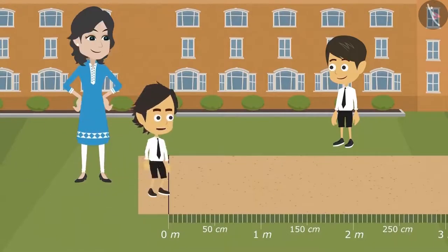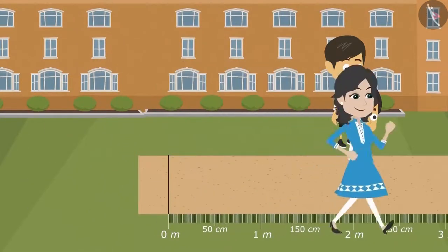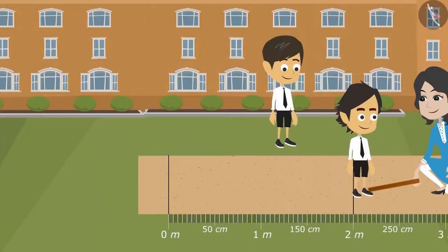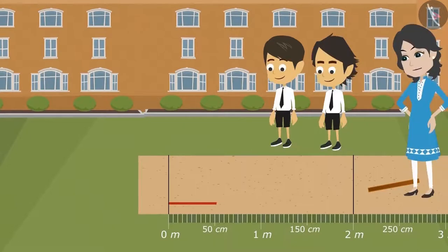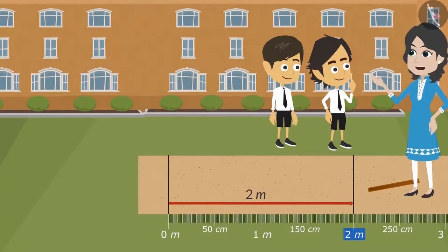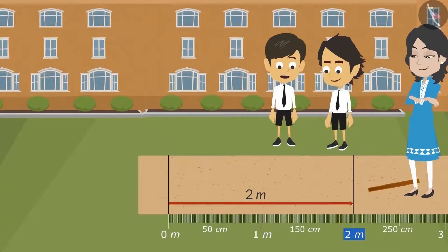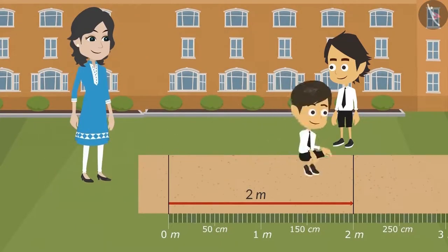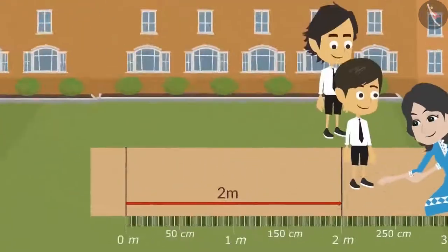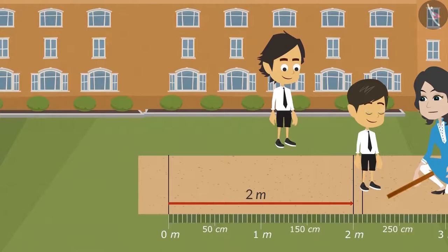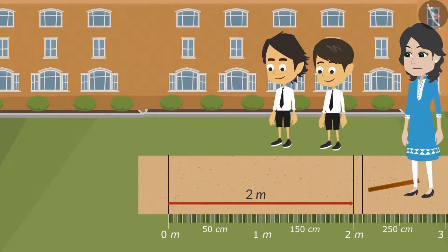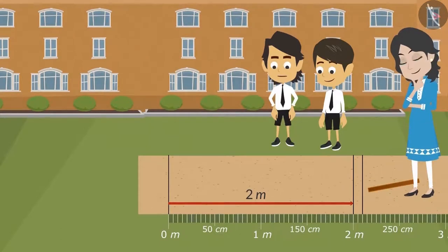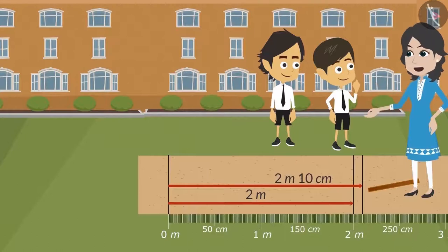I will jump first. How long did I jump? Let's measure it. You have jumped 2 meters, Ayushman. Can you jump longer than this, Rayyansh? It doesn't look very difficult, let me try. Hey Rayyansh, you have jumped longer than Ayushman, but there is not much difference. Let's measure — then we will know. Rayyansh, you have jumped 2 meters and 10 centimeters.